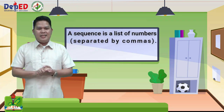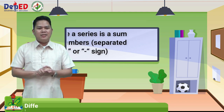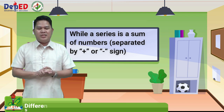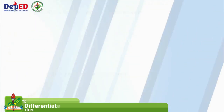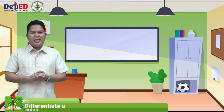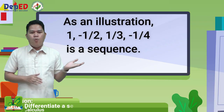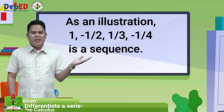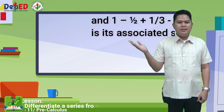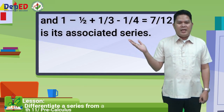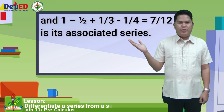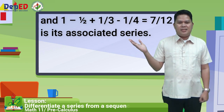A sequence is a list of numbers separated by commas, while a series is a sum of numbers separated by plus or minus sign. As an illustration: 1, negative one-half, one-third, negative one-fourth is a sequence, and 1 minus one-half plus one-third minus one-fourth equals 7 over 12 is its associated series.